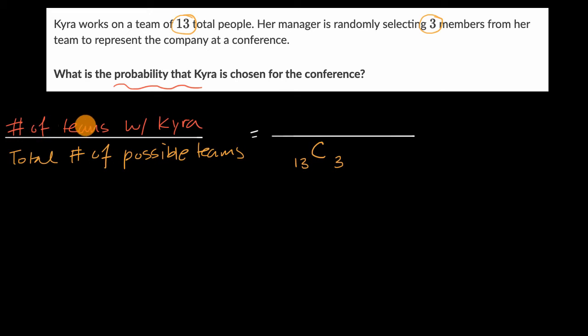Now, what are the total number of teams, possible teams, that could have Kyra in it? Well, if we know that Kyra's on a team, then the possibilities are, who's going to be the other two people on the team? If Kyra's already on the team, there's a possible 12 people to pick from. So there's 12 people to choose from for those other two slots. And we're going to choose two. We don't care about the order with which we are choosing them. So it is going to be a combination.